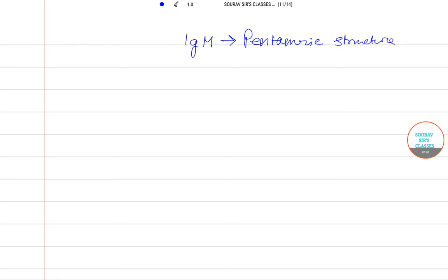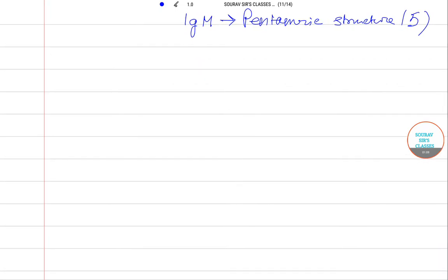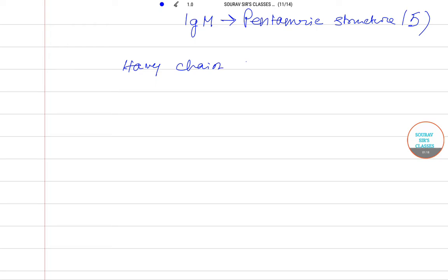That means it has five structures. We have heavy chains—that is two heavy chains—and light chains—we have two light chains. IgM is a pentameric structure.